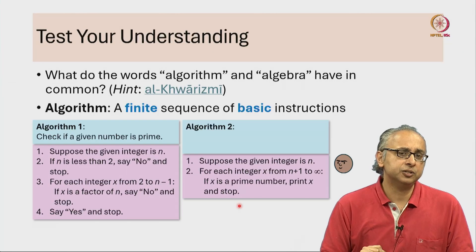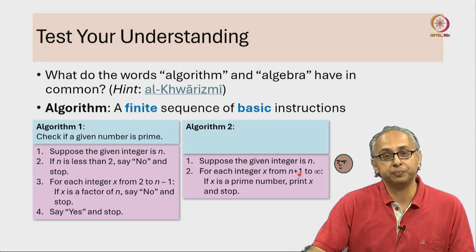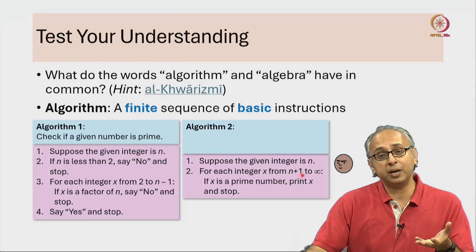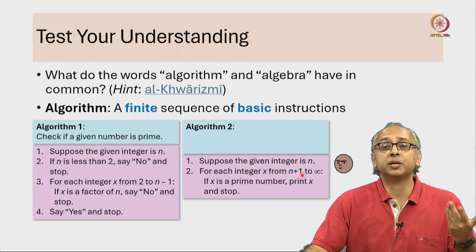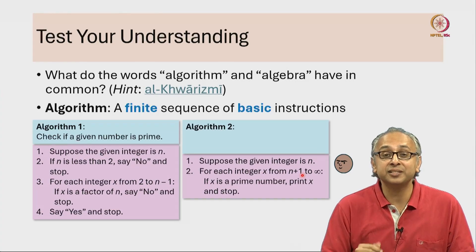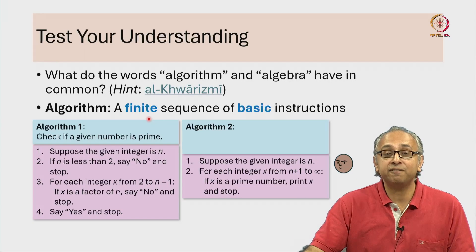But what if x is not a prime? Well then we have to check the next integer. So we will start with n plus 1, if that is not a prime we will try n plus 2, n plus 3, n plus 4 and of course our concern is this sequence of steps may not be finite.